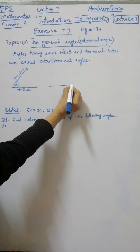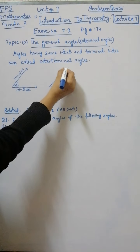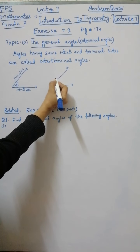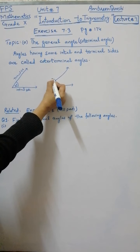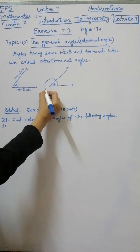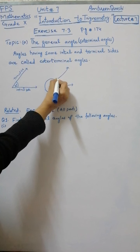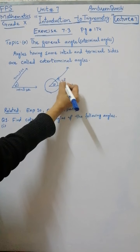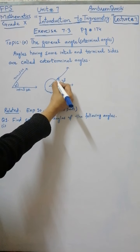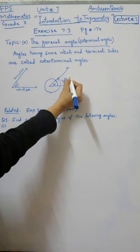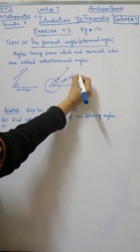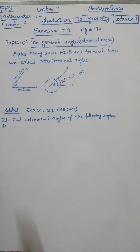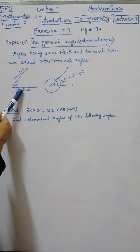First of all, you have an angle of 30 degrees. Here is the initial side. Now, you have an angle of 30 degrees, and because it is above the axis, it becomes plus 390 degrees. This is the co-terminal angle — it has two sides, one is the initial and one is the terminal.